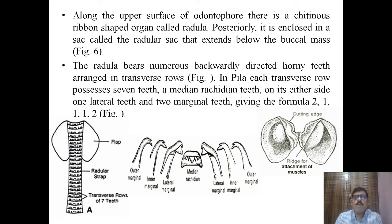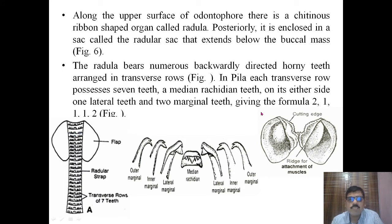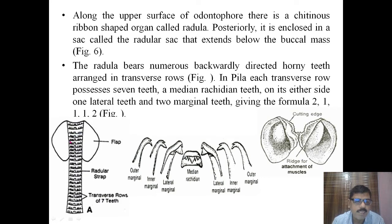Along the upper surface of the odontophore there is a ribbon-shaped organ called the radula. The radula is a ribbon-shaped structure, and posteriorly it is enclosed in a sac called the radular sac that extends below the buccal mass. The radula bears numerous backwardly directed horny teeth, and it is a ribbon-like structure with transverse rows of seven teeth.